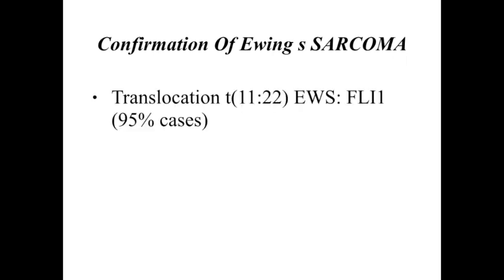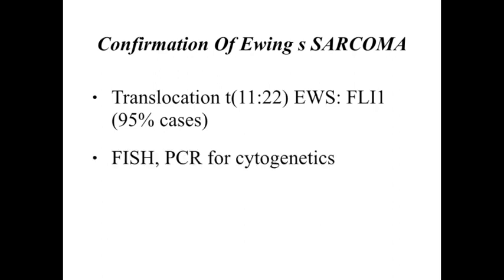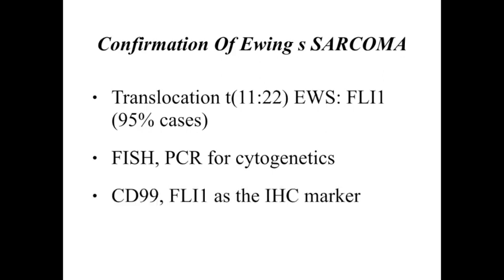For that, you would require FISH for cytogenetics, where in 95% of cases you get translocation between chromosome 11 and 22. The other translocation is between chromosome 21 and 22, characterized by the genes EWS and ERG. The IHC markers commonly used for diagnosis are CD99 and FLI1, out of which FLI1 is considered more specific.